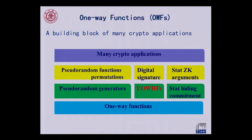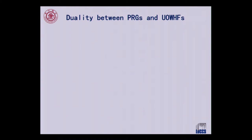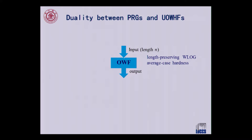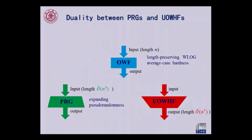A more interesting phenomenon is that universal one-way hash functions and PRGs are dual objects. I will call UOWHFs 'woofs' because it's very time-consuming to pronounce the full name. The duality, established by Naor-Yung and improved in Eurocrypt 2010, is that for a PRG the output is always greater than the input (expanding), while for a woof it is shrinking — otherwise it's trivial.